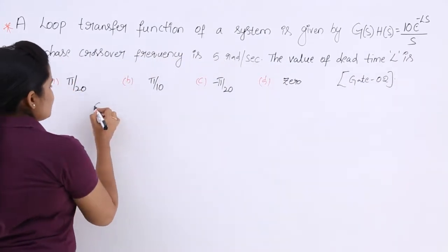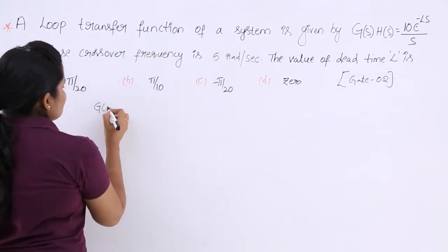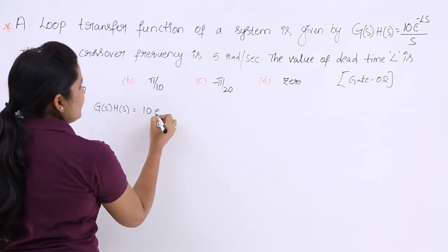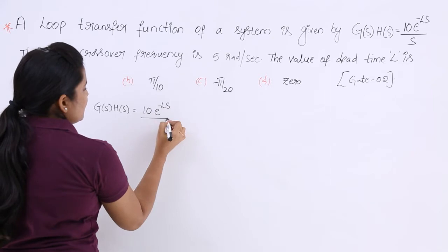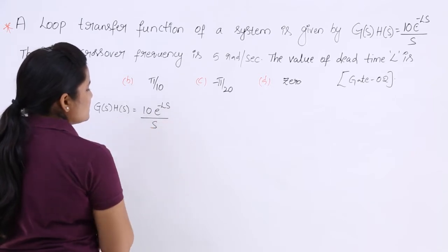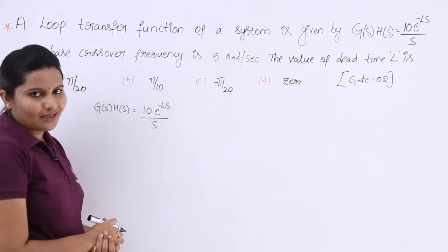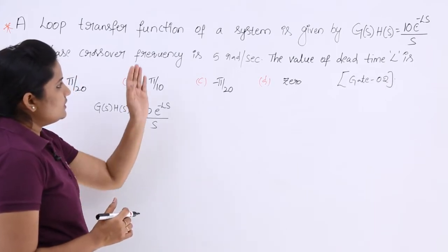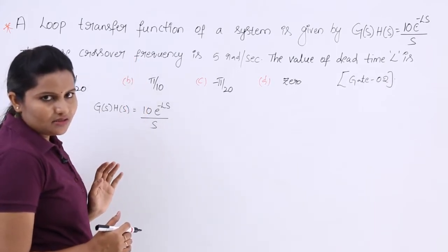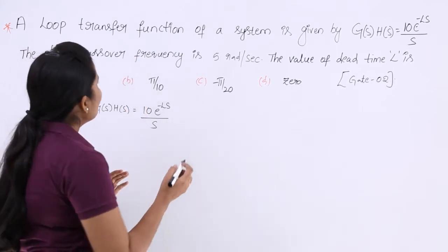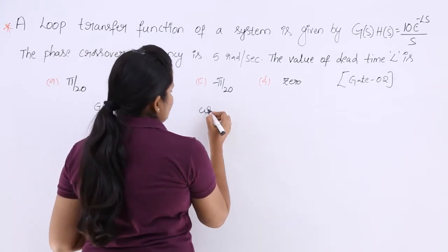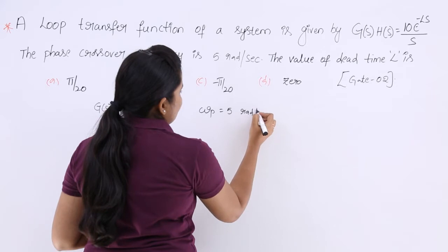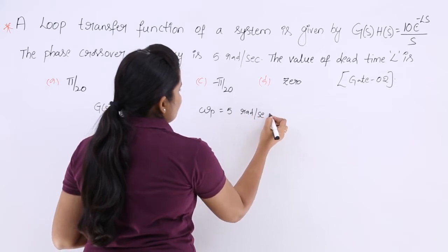The given data is G(s)·H(s) equal to 10 times e to the power minus Ls divided by s. This is the loop transfer function given. And the phase crossover frequency Wp is equal to phi radians per second. This is the data given.